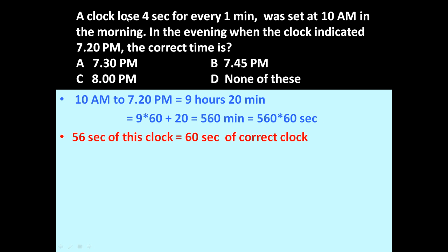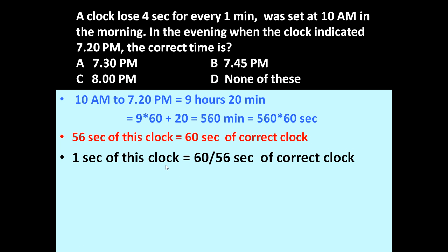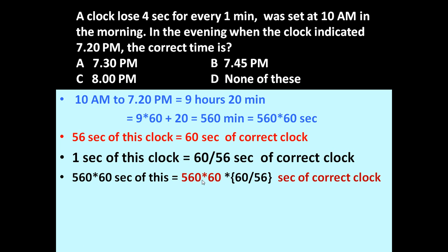Now, since the clock loses 4 seconds for every 1 minute, when this clock is showing 56 seconds, the correct clock will show 60 seconds. So 56 seconds of this clock equals 60 seconds of the correct clock. Therefore, 1 second of this clock equals 60/56 seconds of the correct clock. This means 560 × 60 seconds of the faulty clock equals 560 × 60 × (60/56) seconds of the correct clock.